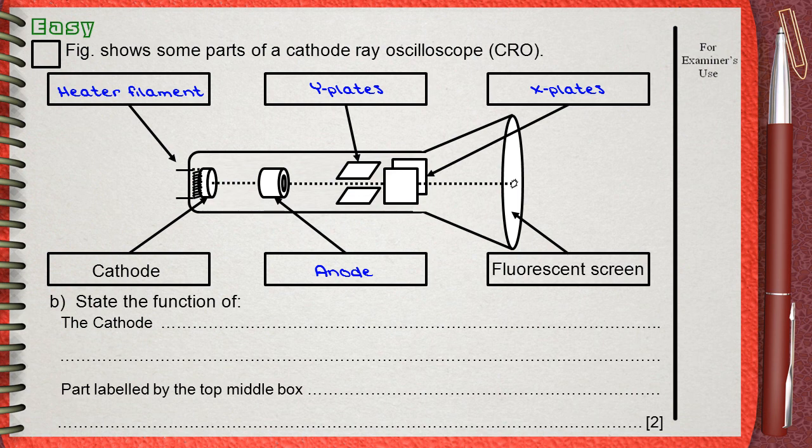Part B: State the function of the cathode and the part labeled by the top middle box, which is the Y plates.